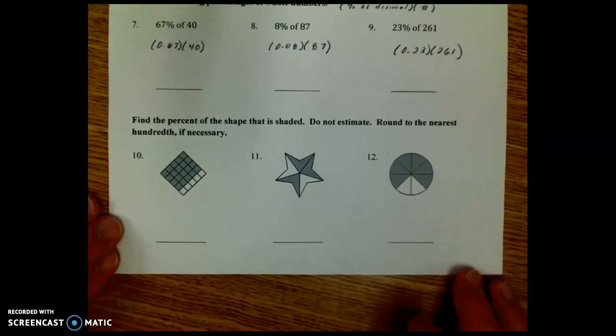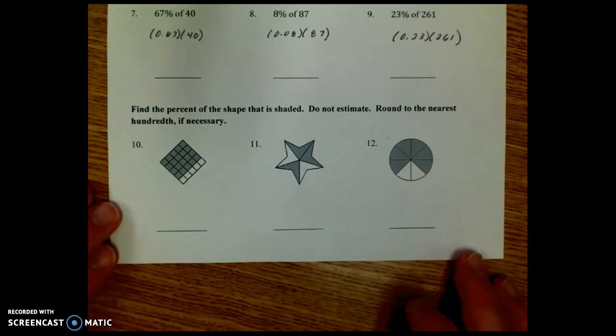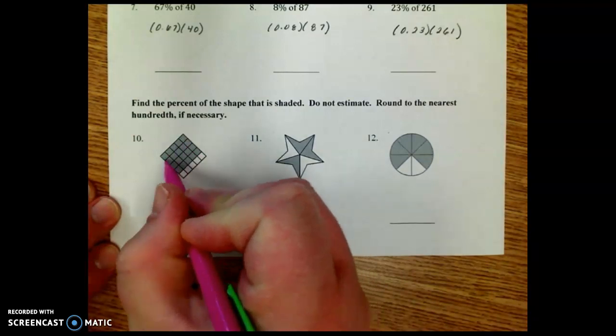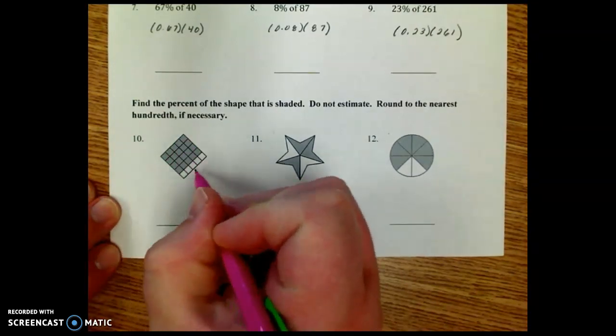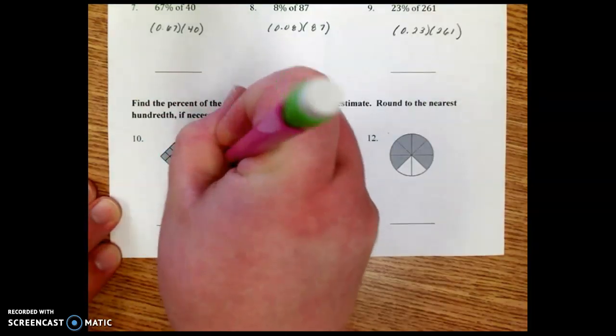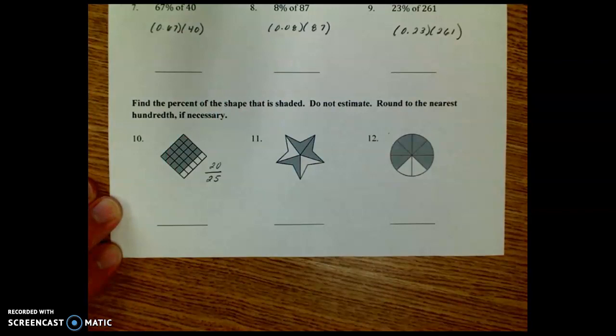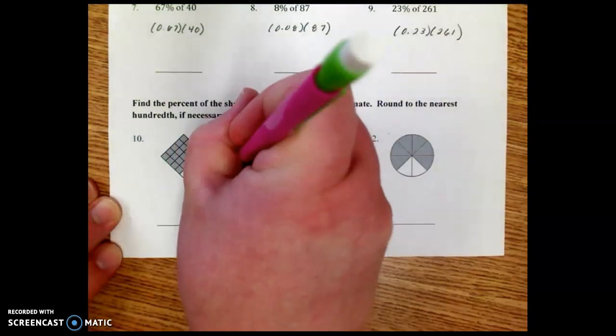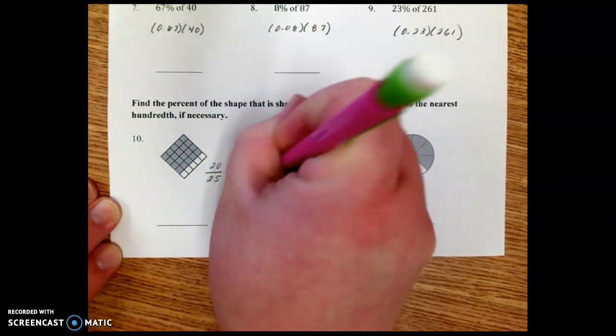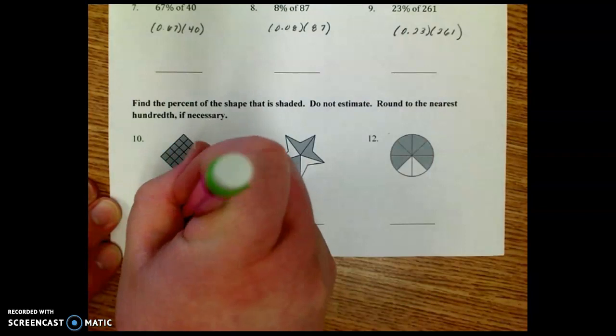The next part says find the percent of the shape that is shaded. Do not estimate. Round to the nearest hundredth if necessary. Well, number 10, if we count the blocks to 5x5 block, that's 25. And 5, 10, 15, 20 out of the 25 are shaded. Well, 20 out of 25, if we scale that up by 4 over 4, that would be 80 over 100. So that percent would be 80% shaded.